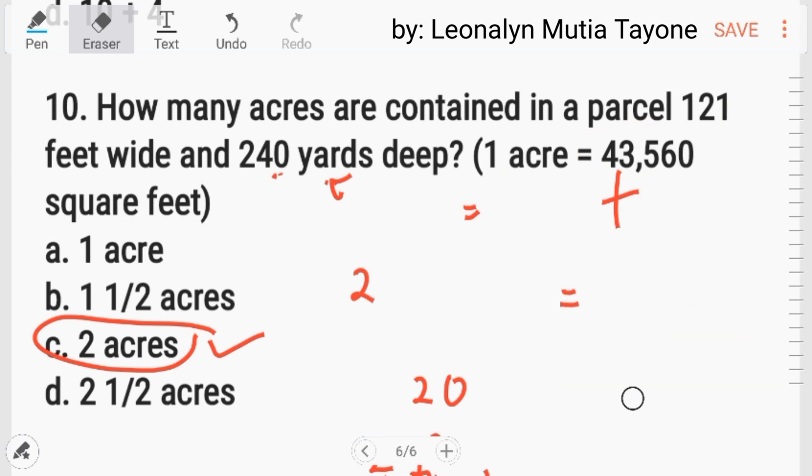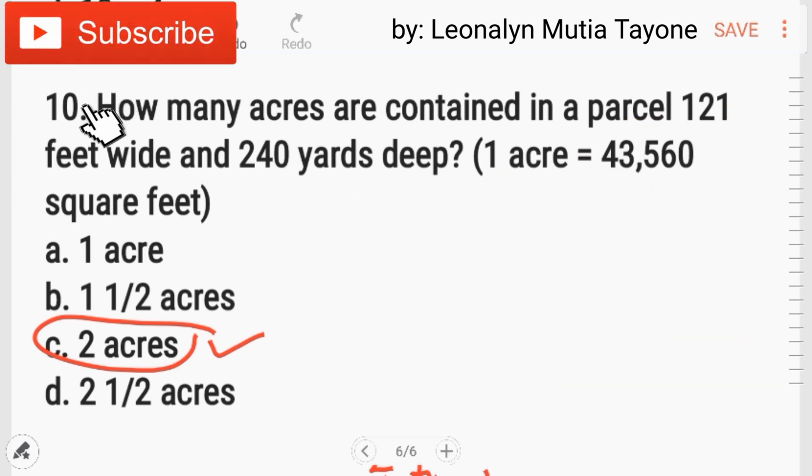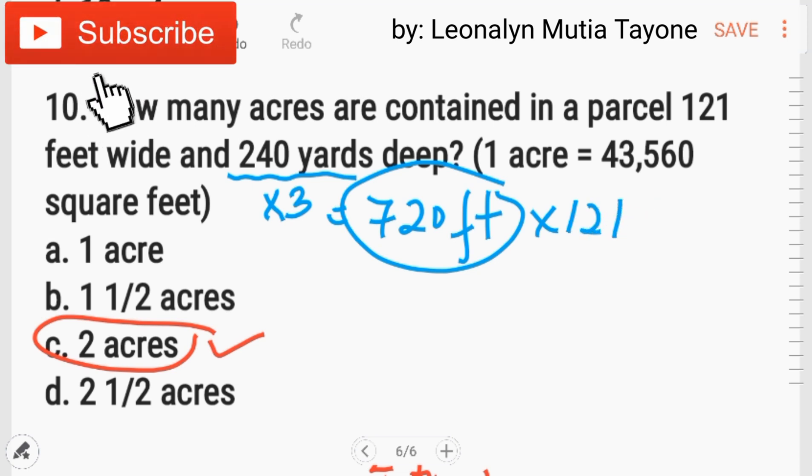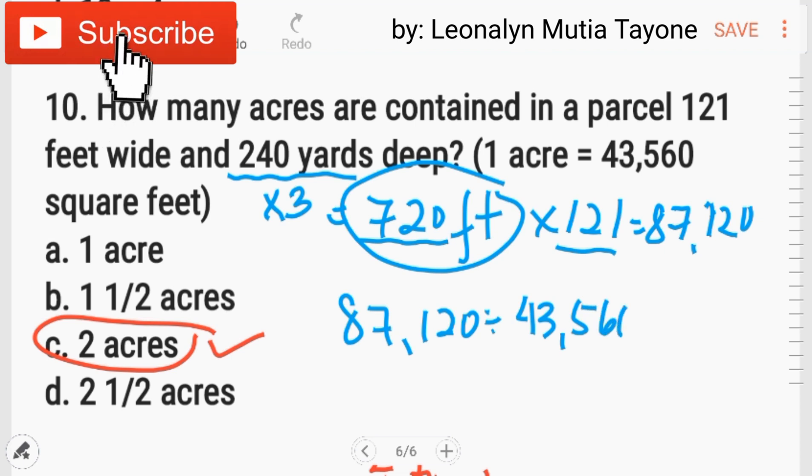Ulitin lang natin para mas klaro. Itong 240 yards, i-multiply muna natin ng three, kasi one yard is equivalent to three feet, para ma-convert na natin siya into feet. So, 720 feet. Itong 720, i-multiply natin sa 121, para makuha natin yung square feet niya. So, ang 720 times 121 that was equals to 87,120. 87,120 divided by 43,560 that is equals to two. So, the answer is letter C.